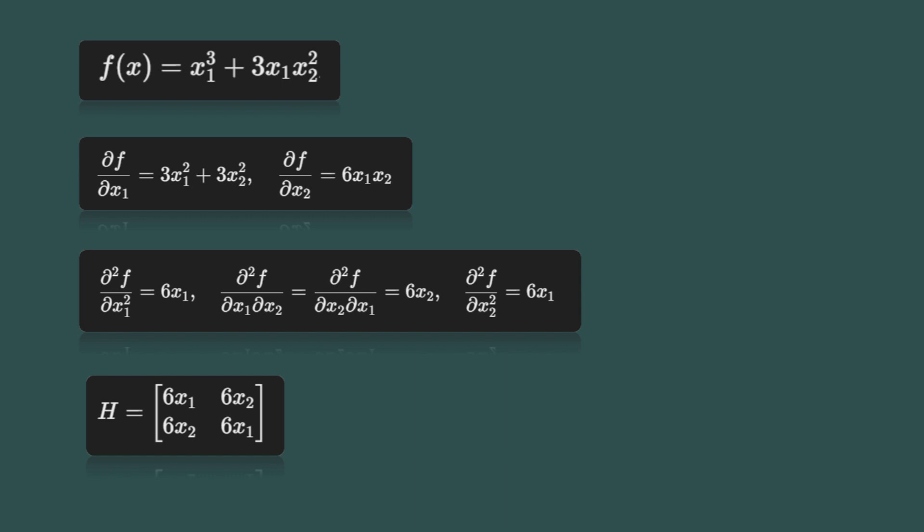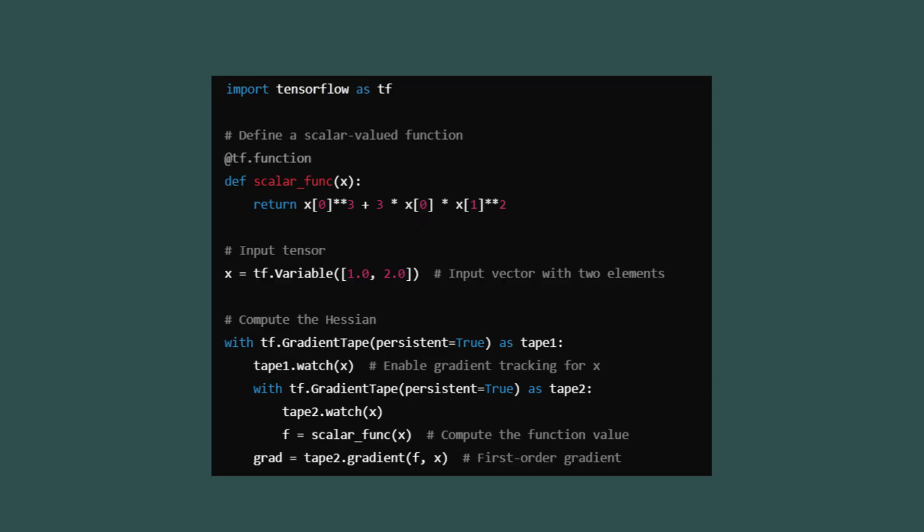Next, we'll look at how this concept is implemented using TensorFlow in the context of neural networks. Specifically, we will compute the Hessian matrix for a loss function in a simple neural network to understand how second-order derivatives can provide insights into the curvature of the loss landscape. In this TensorFlow implementation, we define a simple neural network with one hidden layer and one output neuron. The goal is to compute the Hessian matrix of the loss function with respect to the input features. The input consists of two samples, each with two features.